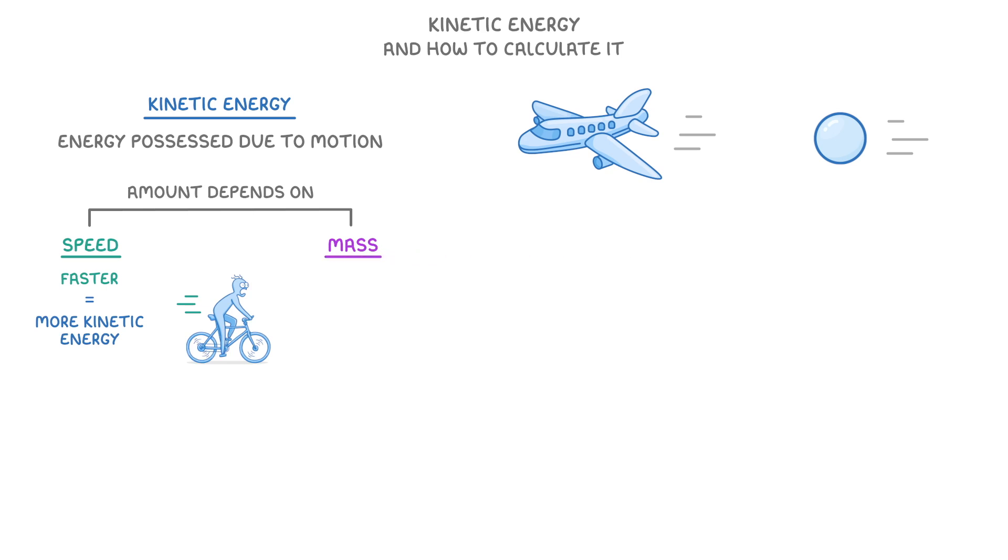Meanwhile for mass, as long as everything else is kept equal, for example the objects have the same speed, then the more mass an object has, the more kinetic energy it will have.